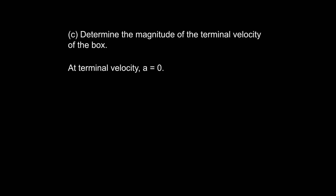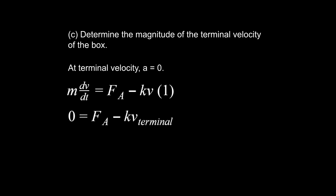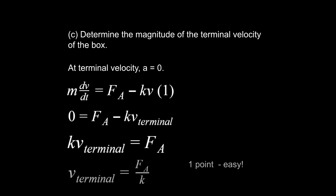Acceleration of the x-axis equals zero — that doesn't mean the box stopped, it means it doesn't get any faster. We go back to our previous equation and set the dv/dt term equal to zero. Since m times zero is zero, that whole term drops out, and we isolate for terminal velocity. That's one more point, bringing us to about seven out of fifteen points just for this preliminary work.